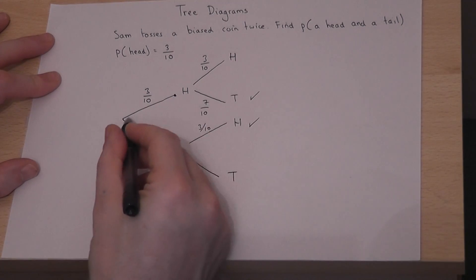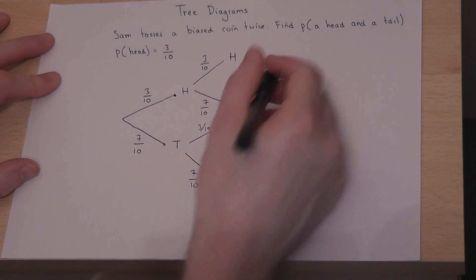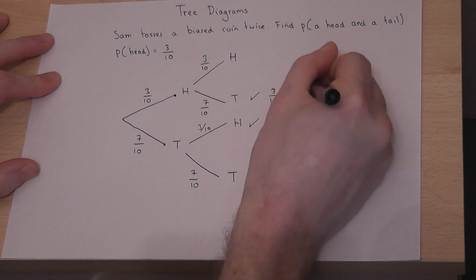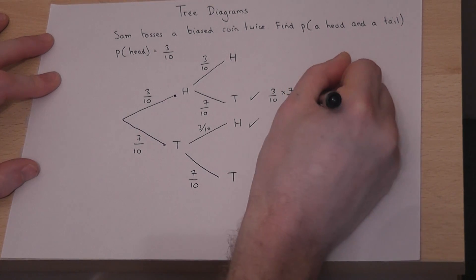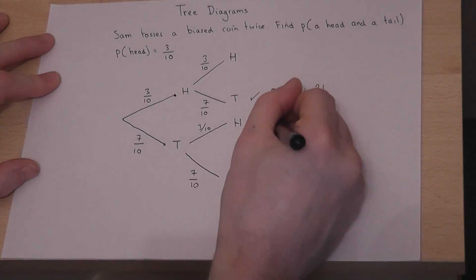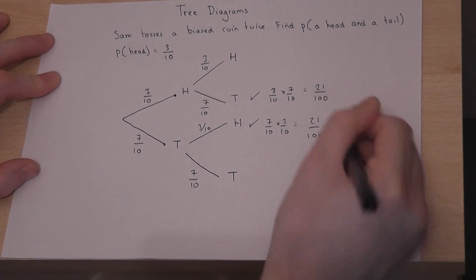And to find the chance of that occurring, we times together the fractions along the way. So this is 3 tenths times 7 tenths, which is 21 out of 100. Or this is 7 tenths times 3 tenths, which is also 21 out of 100.